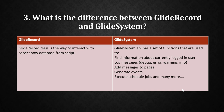GlideSystem API has a set of functions used to find information about the current logged-in user, log messages like gs.debug, gs.error, gs.warn, gs.info, add messages to pages using gs.addInfoMessage, generate events, execute scheduled jobs, and more. One major difference is that with GlideRecord you create your own object — typically using 'var gr = new GlideRecord' — but with GlideSystem you only use the gs object, like gs.error or gs.warning. You cannot create your own GlideSystem object.